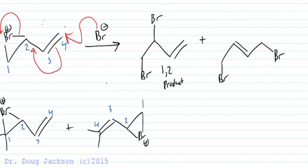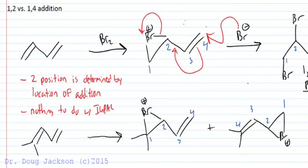And so we end up, if we number these, whereas the initial addition that we numbered, we had 1,2,3,4 and so this would be the 1,4 product. And the identity, 1,2 versus 1,4, was determined from the location of the addition in the first step. Where is the action occurring first?